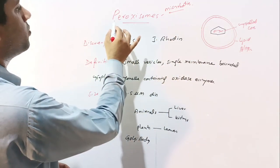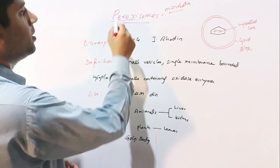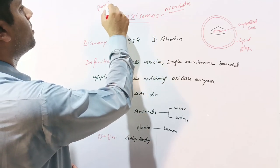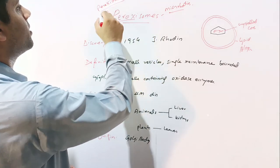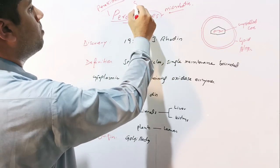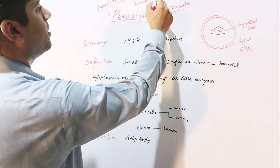Peroxisome is made up of two words. Peroxy is derived from peroxides or peroxidase enzyme, and soma means body. Soma is a Greek word meaning body.